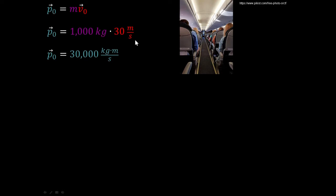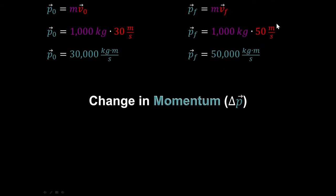It's not that interesting to just multiply two numbers and say this object has 30,000 kilogram meters per second — like a 1,000 kg car moving at 30 meters per second. The analogy is if you're in an airplane going 500 miles per hour, it's not interesting when velocity is constant. It only becomes interesting when the velocity suddenly changes. So let's say that same car is now going 50 meters per second. p-sub-f would be the final momentum, p-sub-naught would be the initial momentum.